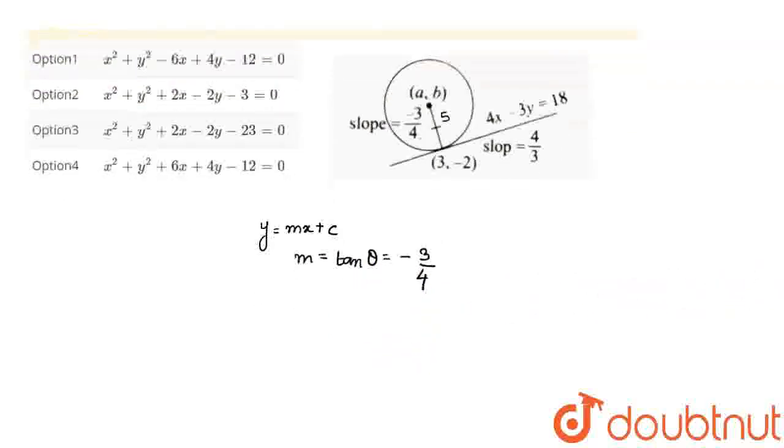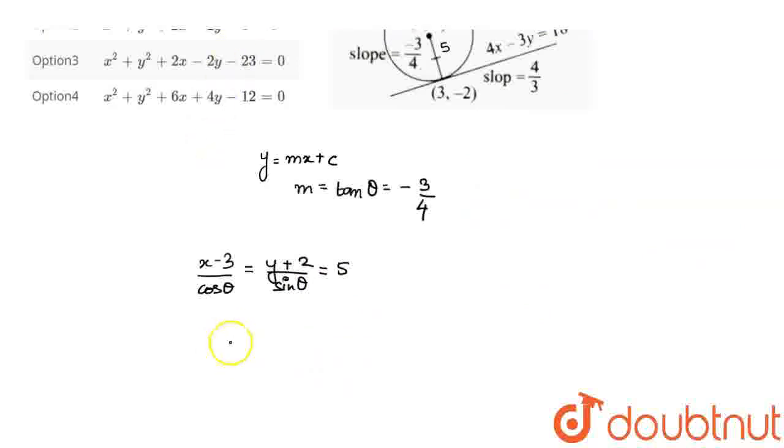We have taken the slope so we can equate x and y coordinates to the radius, so that will be x minus 3 by cos theta is equal to y plus 2 upon sin theta is equal to 5 because these are coordinates 3 comma minus 2. So from here I get the values of x and y respectively, which are x is equal to 5 cos theta plus 3 and y is equal to 5 sin theta minus 2.